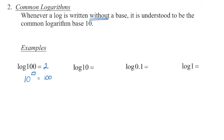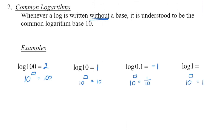In the second one: what is the exponent we put on base 10 that gives us a value of 10? We know 10 to the power of 1 is 10. The next one: the exponent we put on 10 that gives us a value of 1 tenth — that's going to be negative 1. And the final one: the exponent we put on 10 that gives us the value of 1 — anything to the power of 0 gives us 1. All four of those are examples of common logarithms.